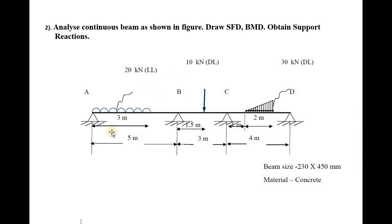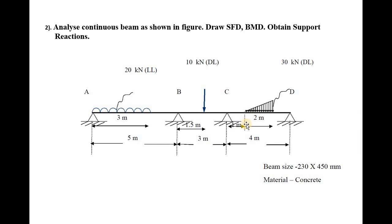On AB span we have a UDL of 20 kilo Newton spread over 3 meters. The complete span length is 5 meters but the UDL is spread over only 3 meters — it comes under live load. The next load is a point load of 10 kilo Newton under dead load, at a distance of 1.5 meters from support B. Third is a UVL of 30 kilo Newton under dead load.